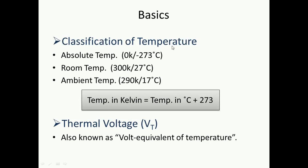First is classification of temperature. We all know that temperature can be measured either in Kelvin or in degree Celsius. There is a formula which helps in converting degree Celsius to Kelvin or from Kelvin to degree Celsius. First is absolute temperature — it is 0 Kelvin or minus 273 degree Celsius. Absolute temperature is the minimum or the lowest temperature. It is always fixed and is kept as a reference temperature most of the time.